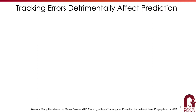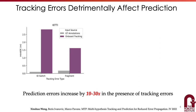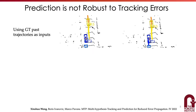Given these perception noises, what are the impacts on the downstream trajectory prediction? To make a fair comparison, we first ran a trajectory prediction model using ground truth trajectories. Results are evaluated under the standard mean ADE, as shown in these gray bars. Similarly, we ran the same prediction model but now using onboard tracking results as inputs. Prediction results are shown in these purple bars. Both numbers are computed for the same set of objects, such as objects with identity switch or with fragments. The comparison shows that prediction errors increase by 10 to 30 times for those objects with tracking errors. A similar trend is also observed on the nuisance datasets, where tracking errors detrimentally affect prediction as well.